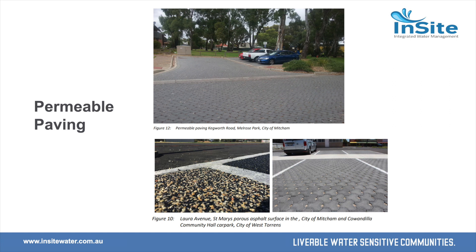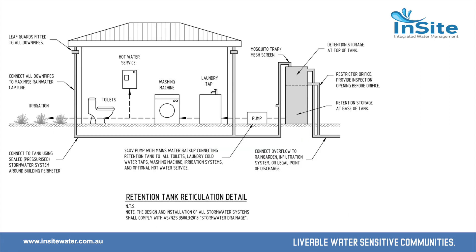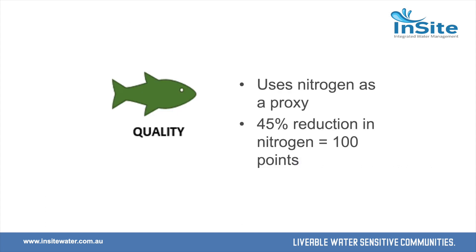Pervious paving might be pavers with void spaces or a more advanced system. It's more expensive than straight concrete or bitumen but tends to be cheaper than a separate OSD tank. The cheapest system is probably the above-ground detention tank - where you have a water tank already but make it a bit bigger and add a slow drainage system. The incremental size between say a 1,000-liter and 2,000-liter tank is only a couple of hundred dollars.